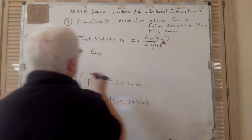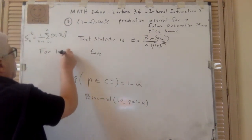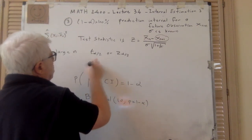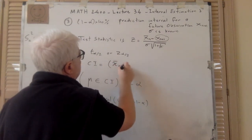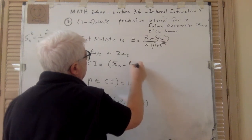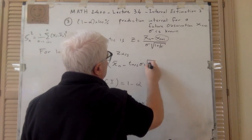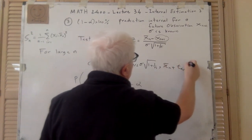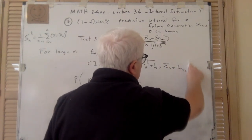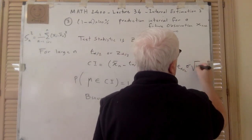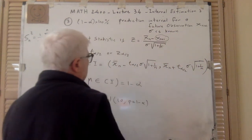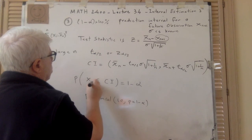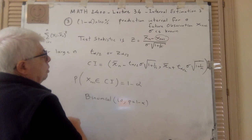Assuming large N, the confidence interval CI will be: (x̄_N minus T_{α/2} times σ times √(1 + 1/N), comma, x̄_N plus T_{α/2} times σ times √(1 + 1/N)). In this case, it is not μ — it is in fact X_{N+1}, the value of X_{N+1} falling within this interval.